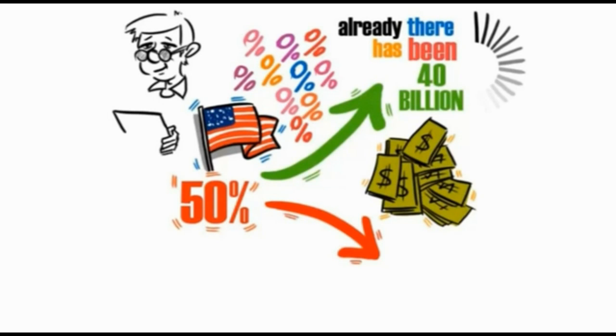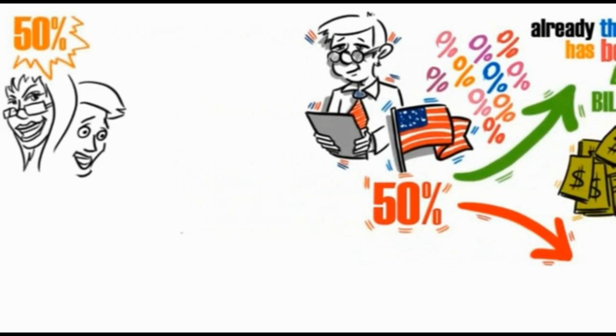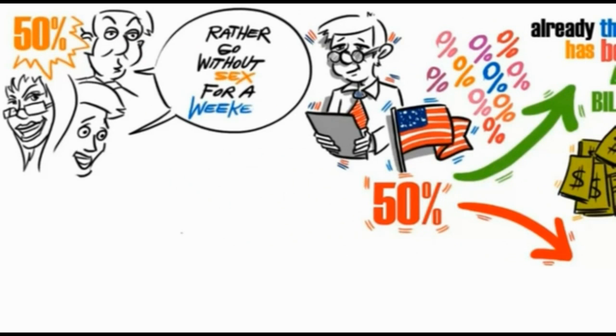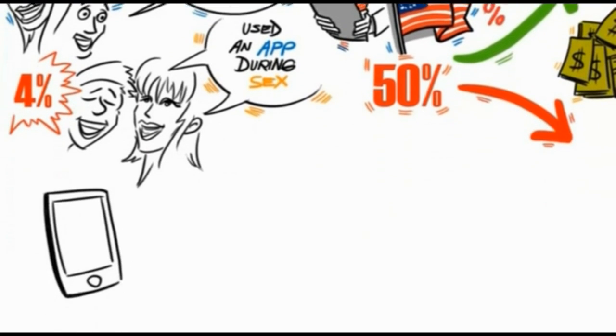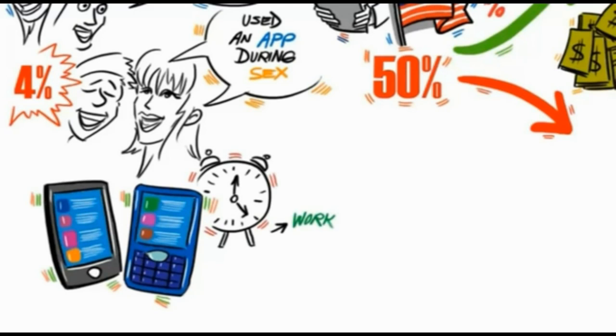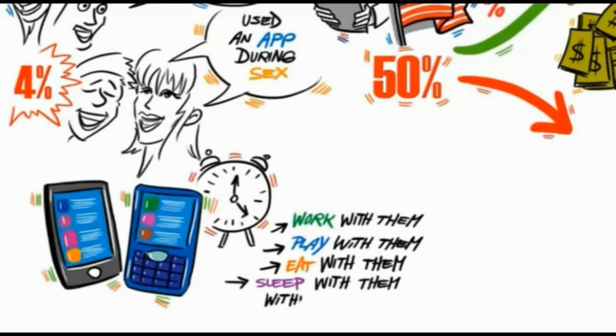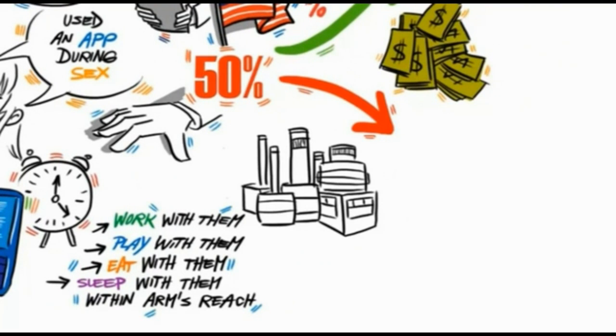That's how popular they are. The average American, for instance, has 41 apps on their smartphone. In a recent online survey, 50% of respondents said they'd rather go without sex for a weekend than give up their mobile apps on their smartphone. 4% said they'd actually use an app during sex. And our smartphones are always with us and they're always on. We can't function without them. We carry them with us all the time. We work with them, we play with them, we eat with them, we sleep with them within arm's reach. And they are always the first thing we grab when we wake up in the morning. Think about it. Mobile apps have become part of our daily lives.